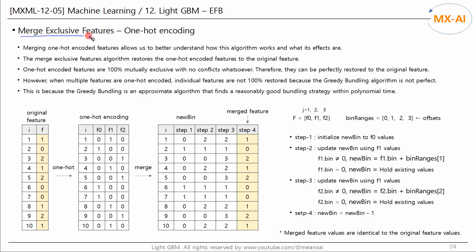Let's merge the one-hot encoded features using the merge exclusive features algorithm. Merging one-hot encoded features allows us to better understand how this algorithm works and what its effects are. This algorithm restores the one-hot encoded features to the original feature. One-hot encoded features are 100% mutually exclusive with no conflicts whatsoever.